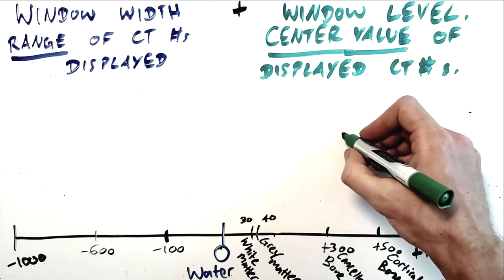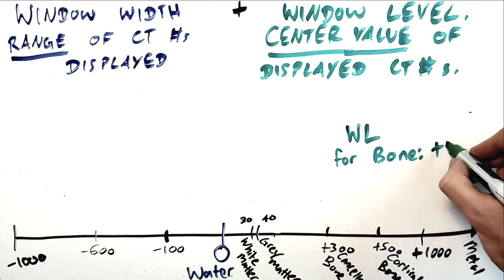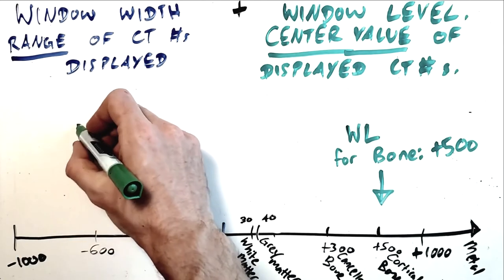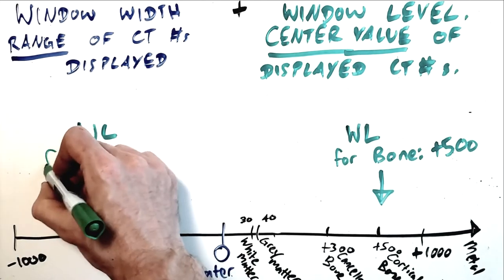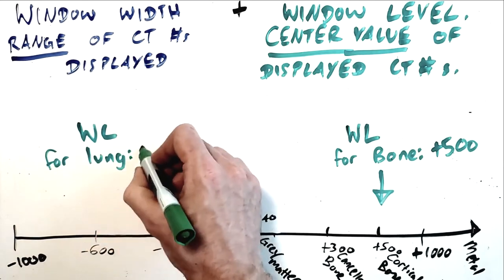If we're assessing high density structures like bone, we want a high window level of around plus 500 because we know bone has a high CT number value. If we're assessing low density structures like lung tissue, we want a low window level of around minus 500 because we know that lung tissue has a low CT number value.